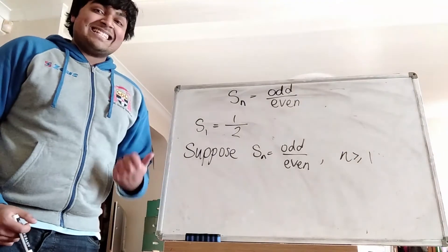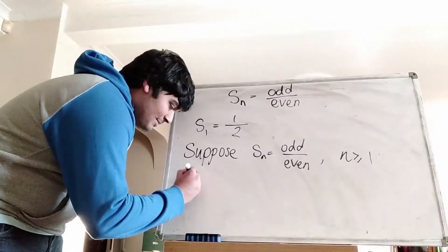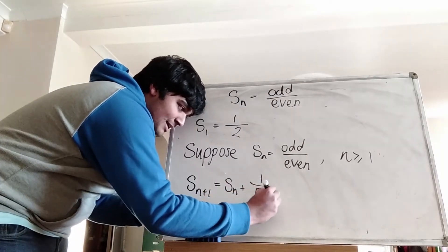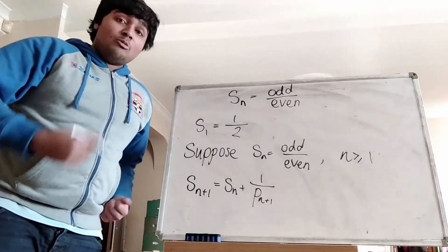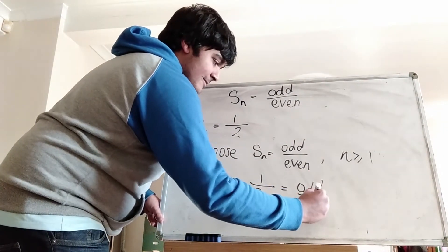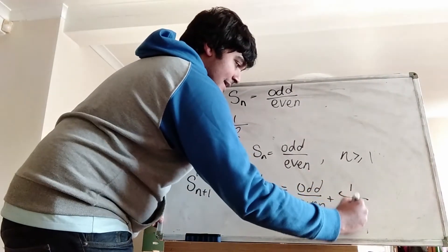Now what we're going to look at is Sn plus 1. So Sn plus 1, well we know that's just Sn plus 1 over Pn plus 1, but Sn we know is of the form odd over even. So that's odd divided by even plus 1 over Pn plus 1.